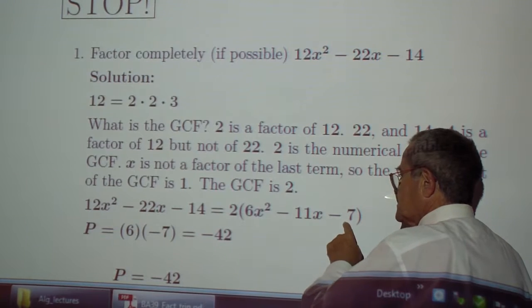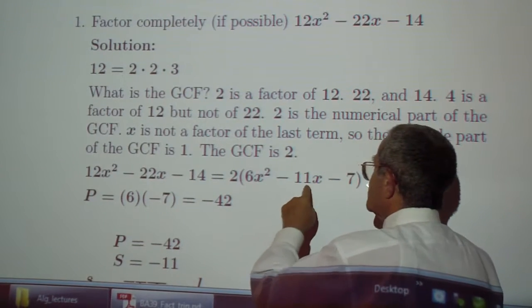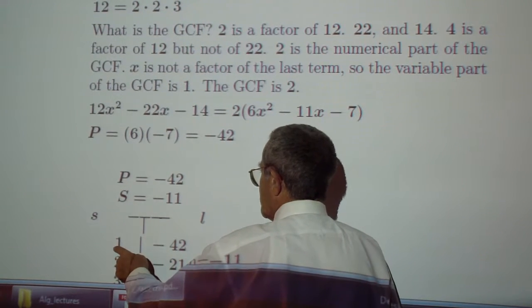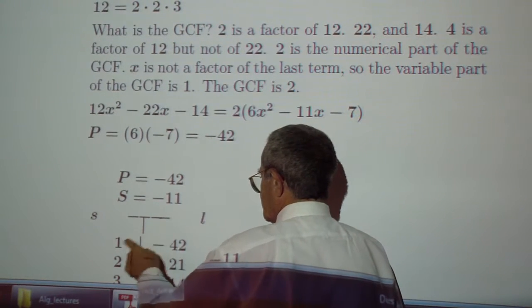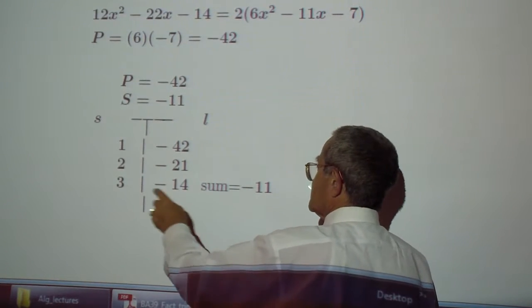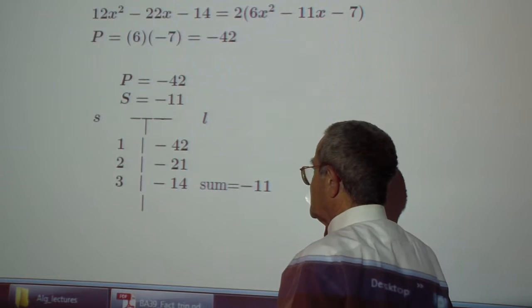Product: 6 times negative 7, negative 42. Sum: negative 11. Large number negative, small number positive for the product to be negative. Run through all the divisors, and immediately you get 3 minus 14. Negative 11.